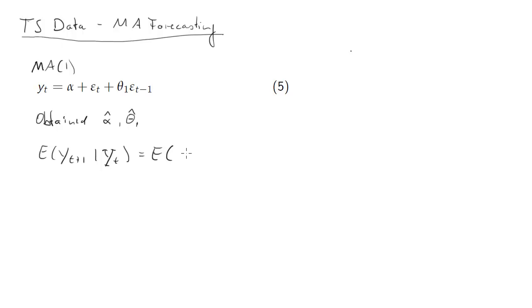We'll do this first mechanically. We'll just replace the y_t+1 with the process equation and the parameters with the estimated parameters, so alpha hat plus epsilon_t+1 because we have y_t+1 here, plus theta 1 hat times now this is one period lag, that error term is one period lag relative to this, so we need epsilon_t.